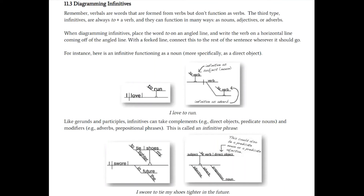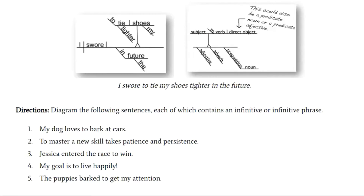In 'I swore to tie my shoes tighter in the future,' I swore what? We have an entire infinitive phrase. 'To' is on the diagonal line, 'tie' is on the straight line. This takes on a direct object: tie what? Tie my shoes. Tie how? Tighter. When? In the future. We're really using a lot of the skills accumulated thus far.